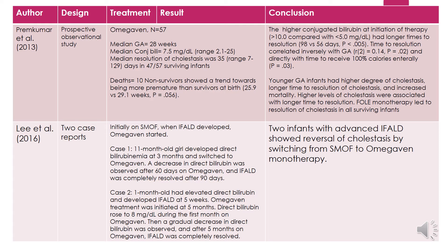In case 2, a 1-month-old boy who could not tolerate PO feeds and was kept on full parenteral nutrition had elevated direct bilirubin and developed intestinal failure-associated liver disease at 5 weeks. Omegaven treatment was initiated at 5 months. Direct bilirubin rose to 8 during the first month on Omegaven, then a gradual decrease in direct bilirubin was observed, and after 5 months on Omegaven, it was resolved.